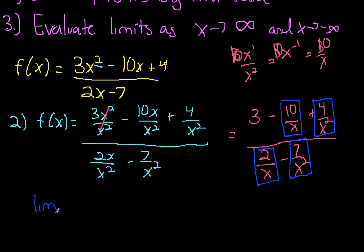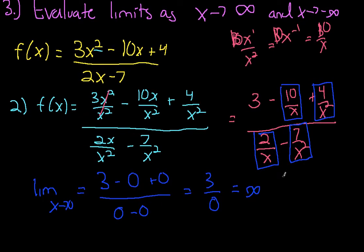So the limit as x approaches infinity is going to equal 3 minus every term becomes 0, except for the one that doesn't have the x on the bottom. So what this becomes is 3 over 0. Well, we know 3 divided by 0 is equal to infinity. So what we say then is the asymptote approaches infinity. The limit is kind of going on forever.